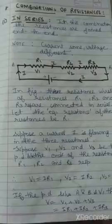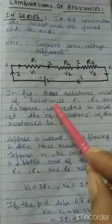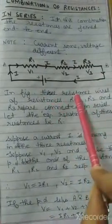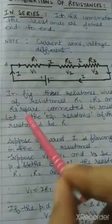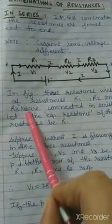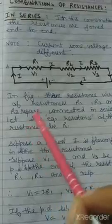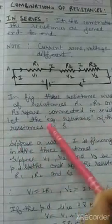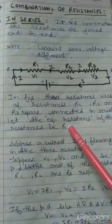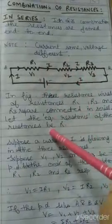Description of this figure: three resistance wires of resistances R1, R2, and R3 respectively are connected in series. Let the equivalent resistance of the three resistances be R.